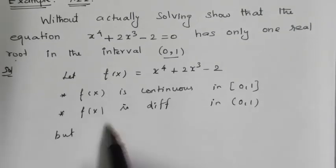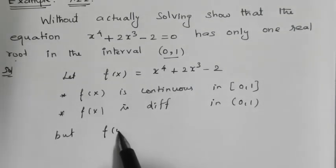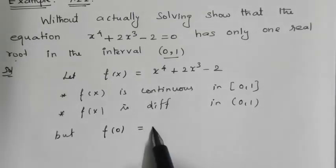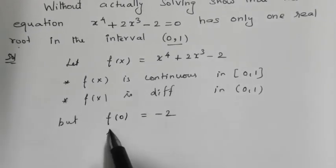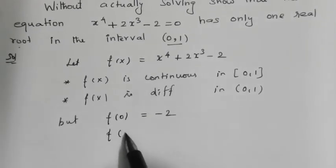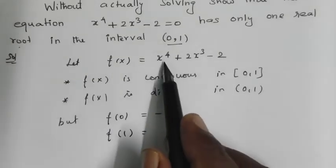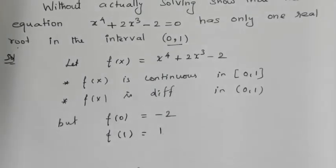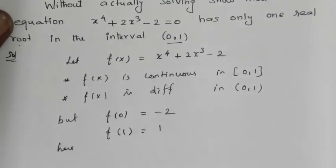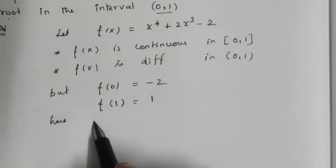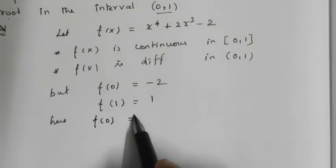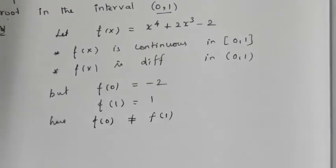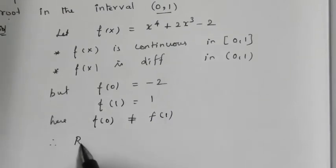Now, f(0) = -2 and f(1) = +1. Here, f(0) is not equal to f(1).